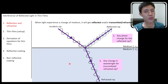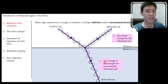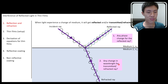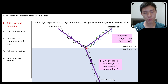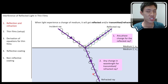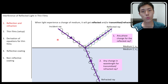Let's try to tackle the second question that we discussed earlier, which is whether there's any change in the wavelength for the transmitted or the refracted ray. This is referring to the ray that managed to pass through from medium one to medium two. We want to see whether there's any change in wavelength as compared to the wavelength in medium one.